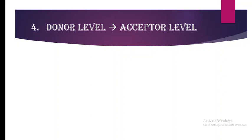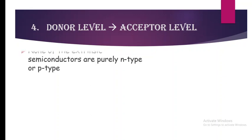The fourth type of transition is between the donor level and the acceptor level. One important thing to remember is that none of the extrinsic semiconductors are purely N-type or purely P-type — we cannot say that if it is N-type then only donors are present.